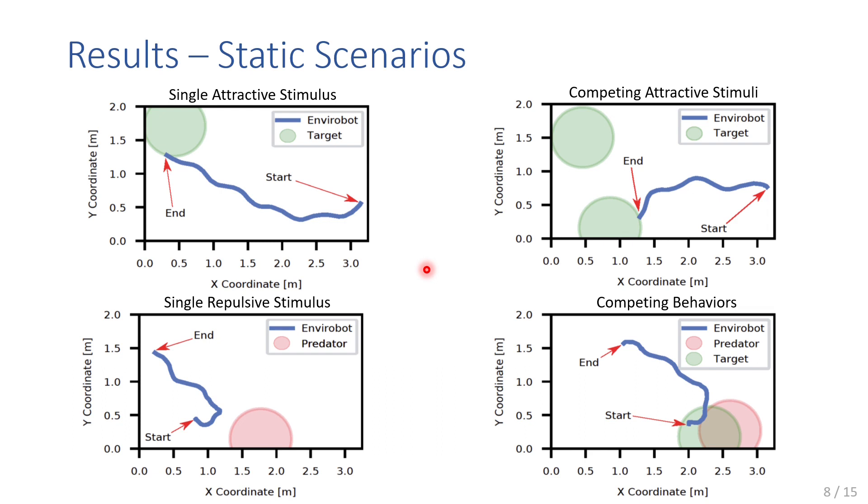Here we can see the trajectories of four distinct scenarios recorded using an overhead tracking system. Each experiment ran for 20 seconds or until collision with either the target or pool sides. When exposed to a solitary attractive stimulus, the Envirobot swam towards the target. When presented with a single predator, the robot performed its escape behavior. The robot successfully targeted the closer of two attractive stimuli, and when faced with choosing between attacking nearby prey and escaping an immediate threat, the Envirobot turned tail and fled.